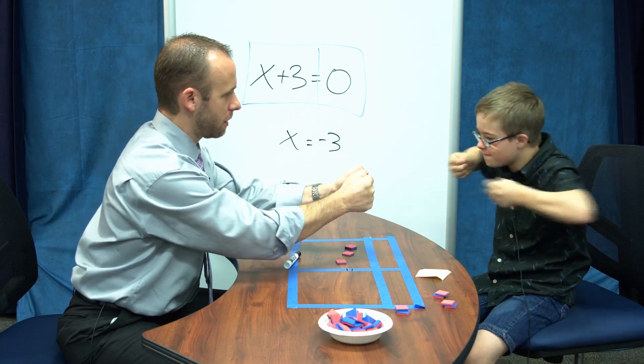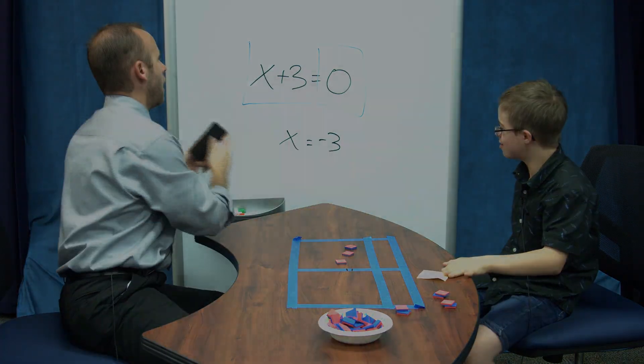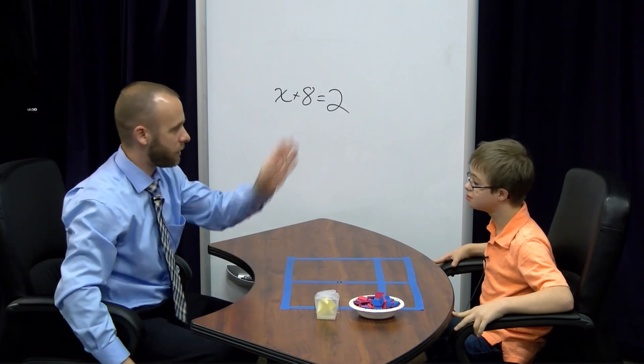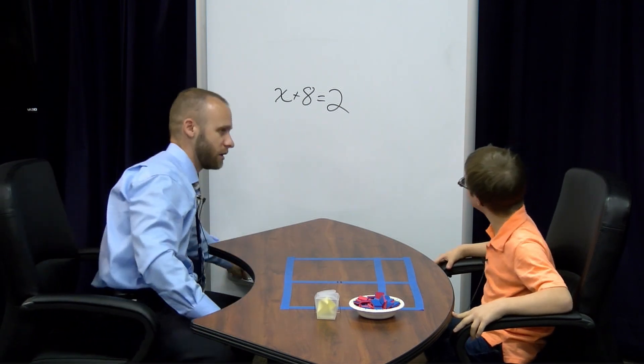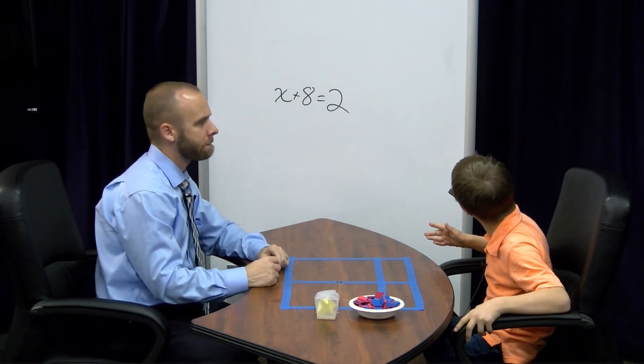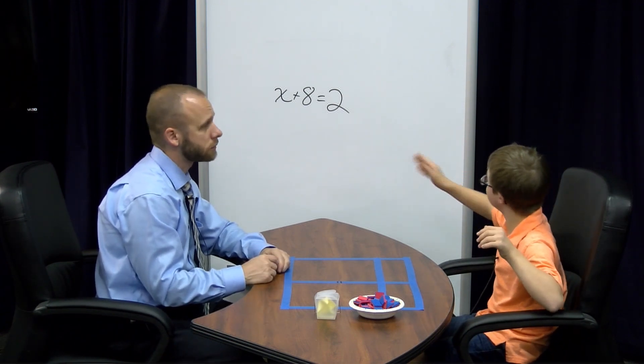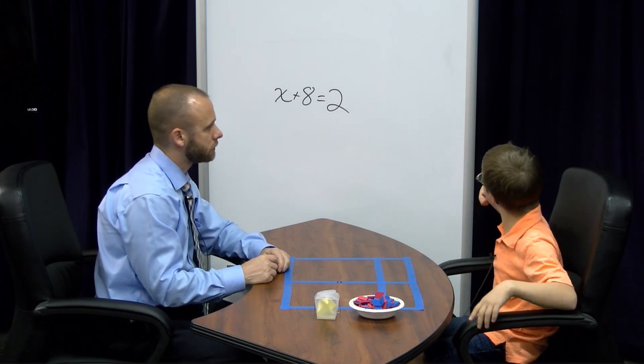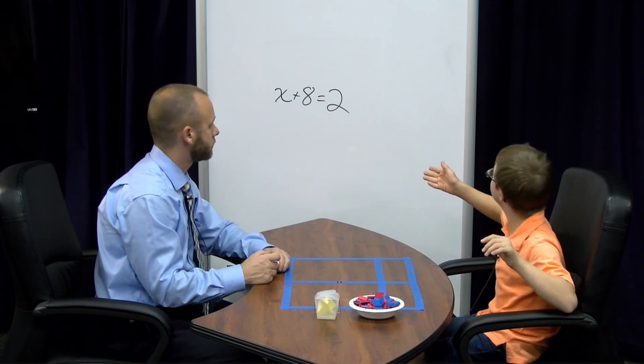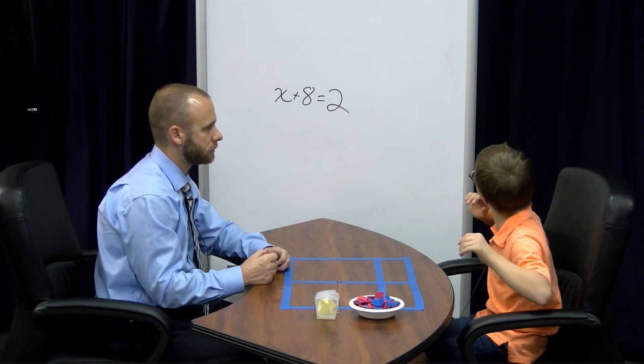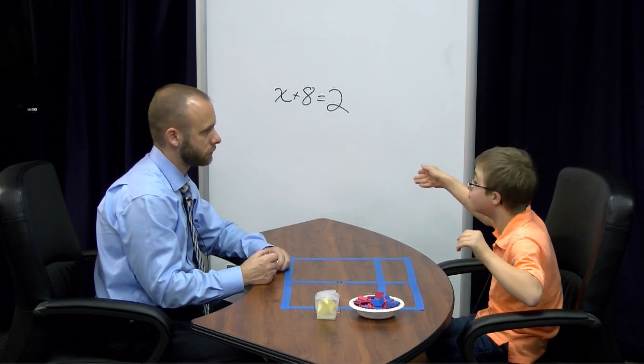How about this? Ready? Here we go. Read it. Set it up. Do it. Tell me what the answer is. X. Remember to talk loud. Tell me, x and positive eight equals positive two. Do it.